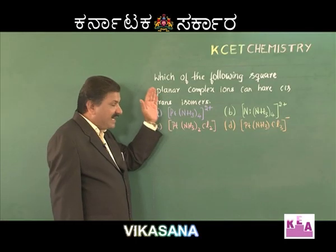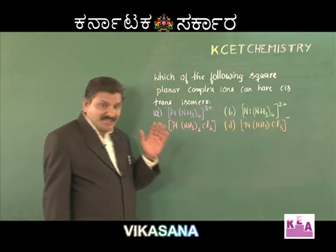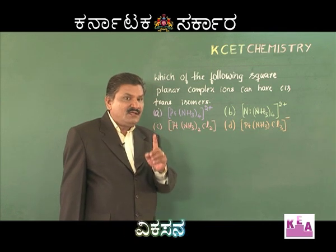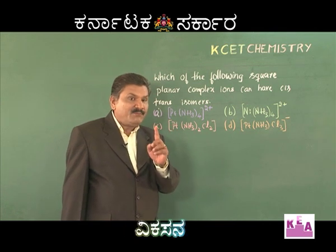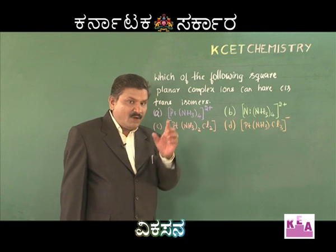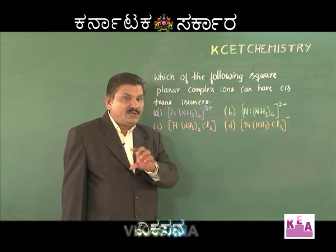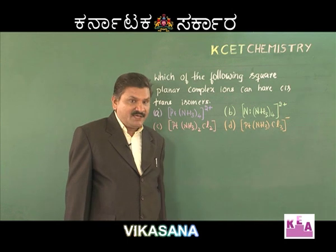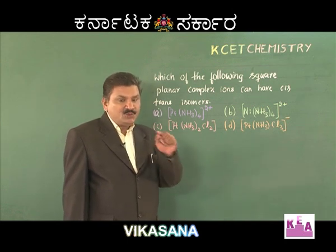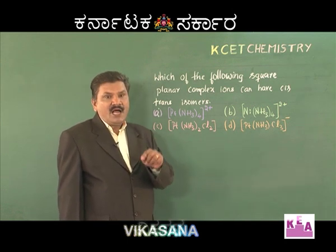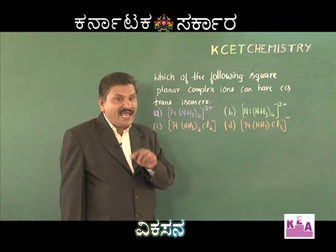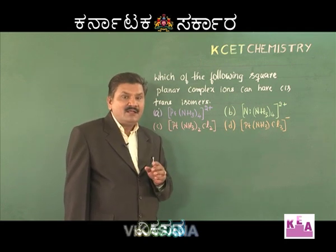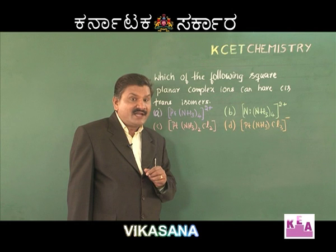One of the conditions for geometrical isomerism is that the complex must be a heteroleptic complex. The complex should have two different ligands in the coordination sphere, and it should be a complex of the type MA₂B₂, where A and B are monodentate ligands.